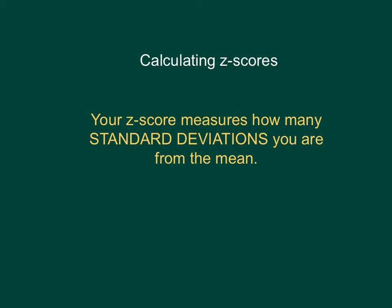Let's take a few minutes to look at z-scores and how to calculate them. Simply put, if you were a piece of data in a data set, your z-score measures how many standard deviations you are from the mean. If your z-score is positive, it means you're above the mean. If your z-score is negative, it means you're below the mean.